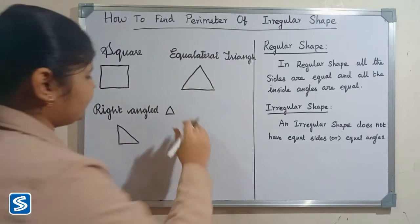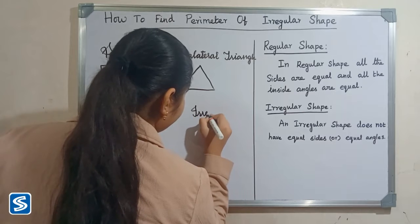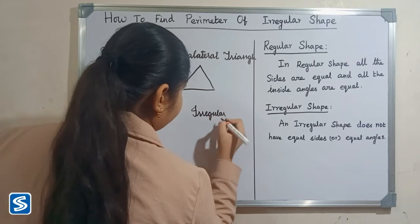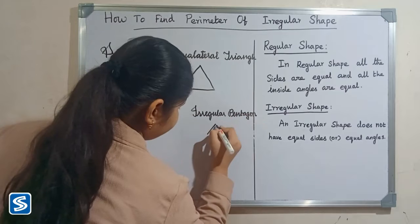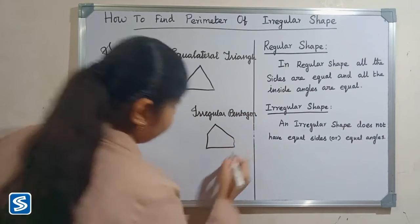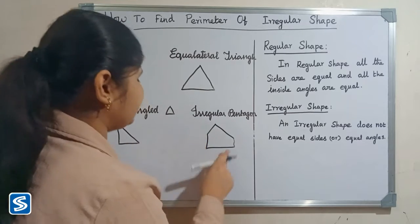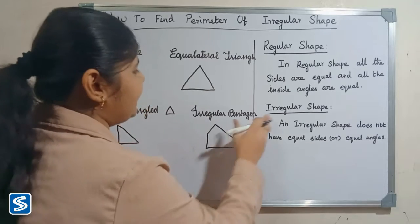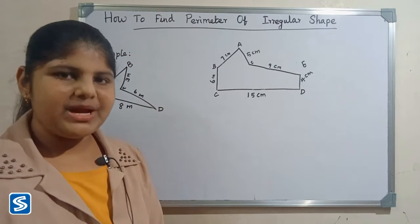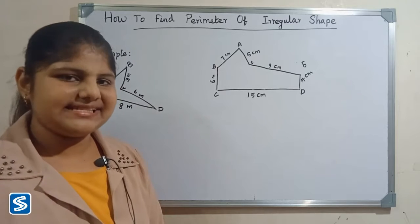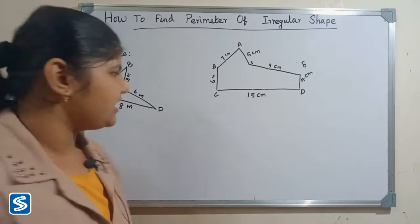The next example is an irregular pentagon, which is an irregular shape. An irregular pentagon does not have equal sides or equal angles. Now let us see how to find the perimeter of an irregular shape. The perimeter is the length of the outline of a shape — that is, the total length of the boundary is called the perimeter.